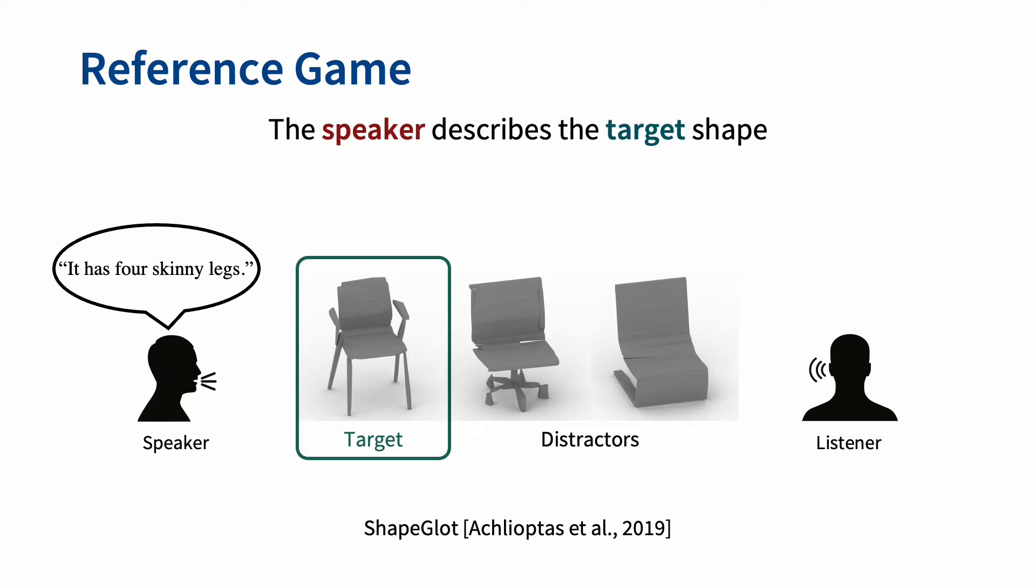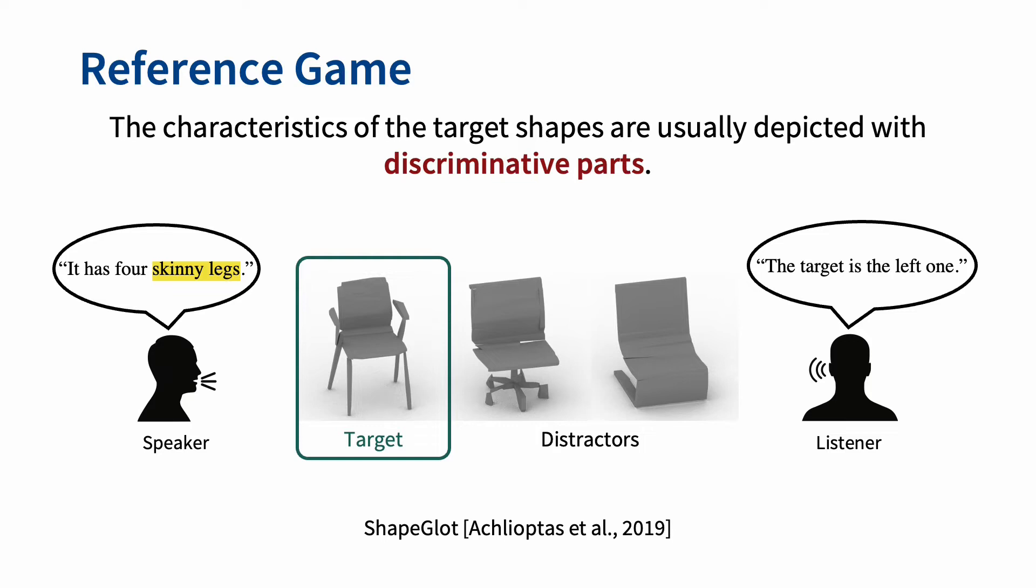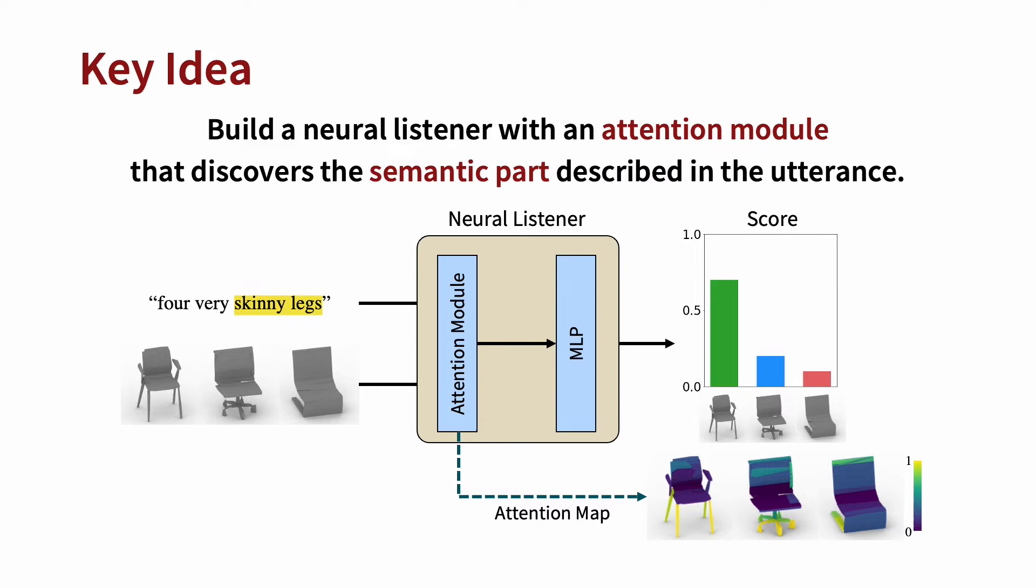Given a triplet of shapes, we let the speaker describe the target shape so that the listener can discriminate the target from the other two distractors. Since the characteristics of the target shape are usually depicted with discriminative parts, the listener can find the target while focusing on the described parts.